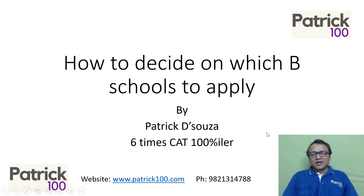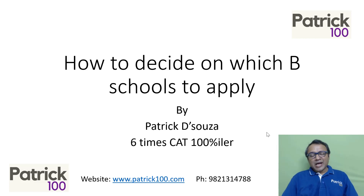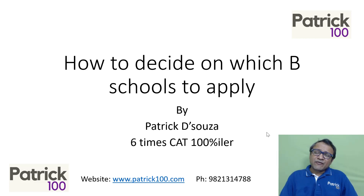Hi, my name is Patrick. With the CAT, Form, ZAT, SNAP, NMAT — all the forms being out — how do you decide which B schools to apply?